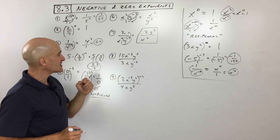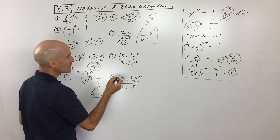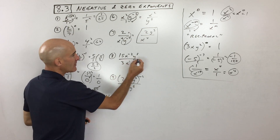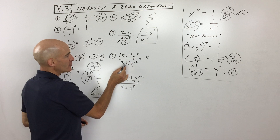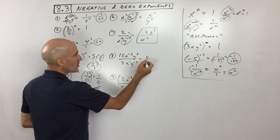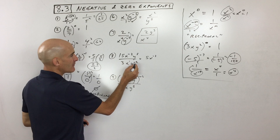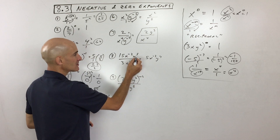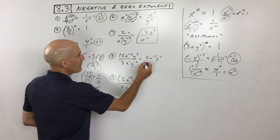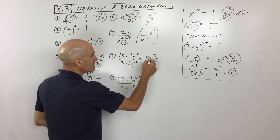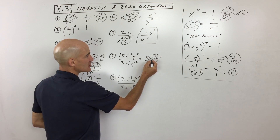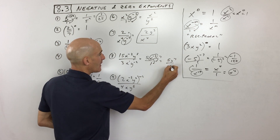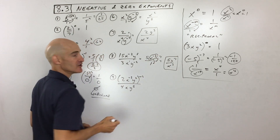Number 8 is a bit different. This is to the first power. 15 divided by 3 is 5. When you divide, you subtract exponents: negative 2 minus 1 gives x to the negative 3rd. For the y's, 5 minus negative 2 is y to the 7th, because subtracting is like adding the opposite. You can think of this as over 1, but the x to the negative 3rd moves to the denominator as x to the positive 3rd.